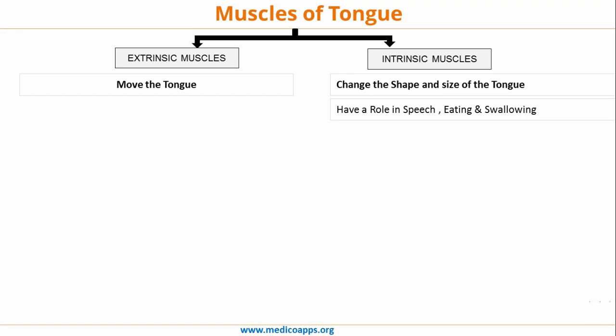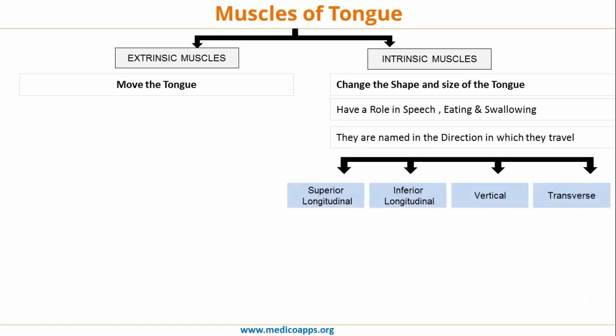Intrinsic group of muscles are named in the direction in which they travel. We have four pairs of intrinsic muscles: the superior longitudinal, the inferior longitudinal, the vertical and the transverse.